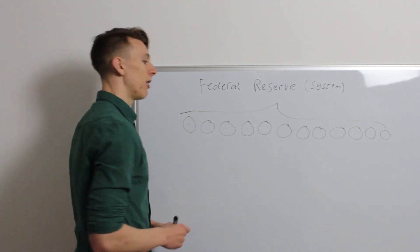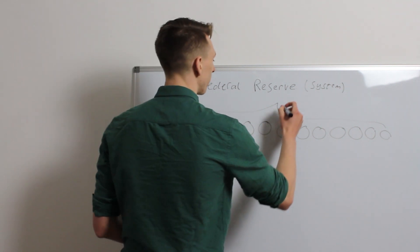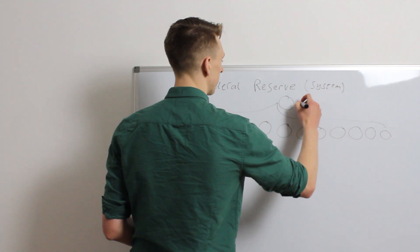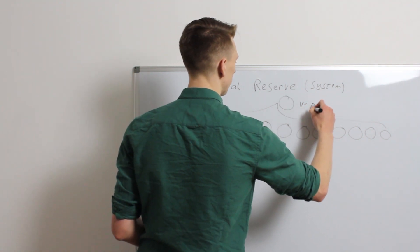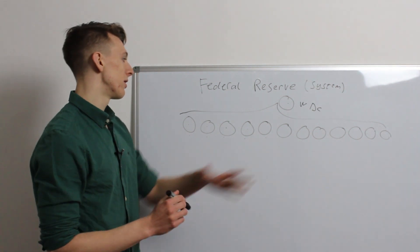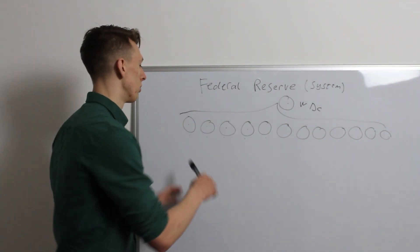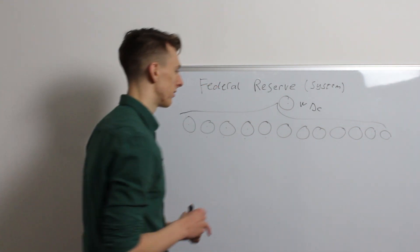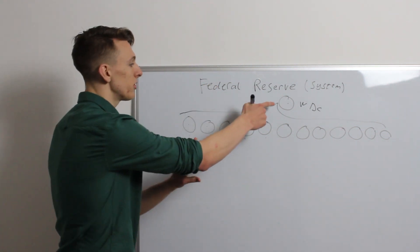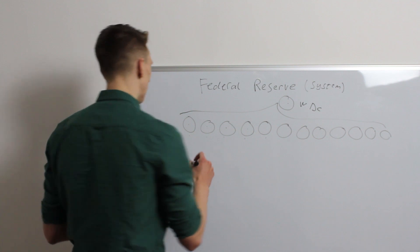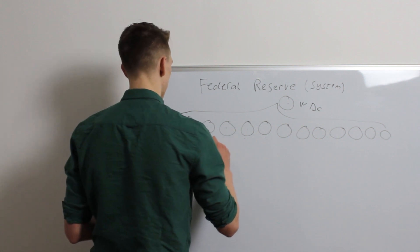Now, you've got these 12 district banks, and they're all overseen by a centralized one in Washington, D.C. And so, it's these people in the overseer mode who affect the rest of the Federal Reserve System. Now, who sits here?